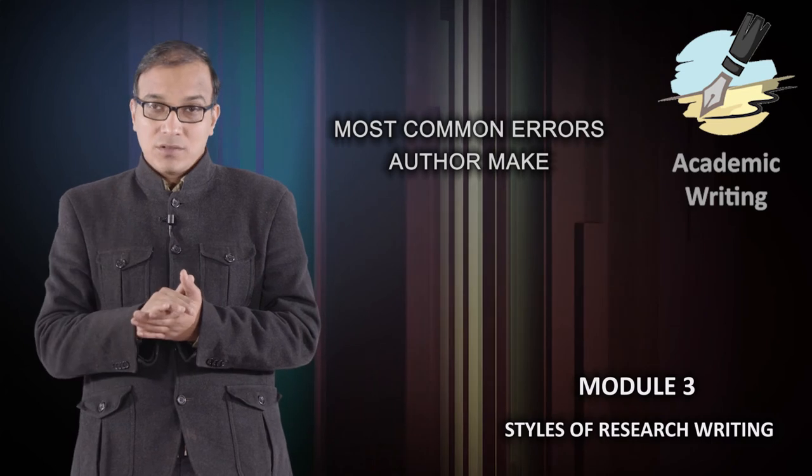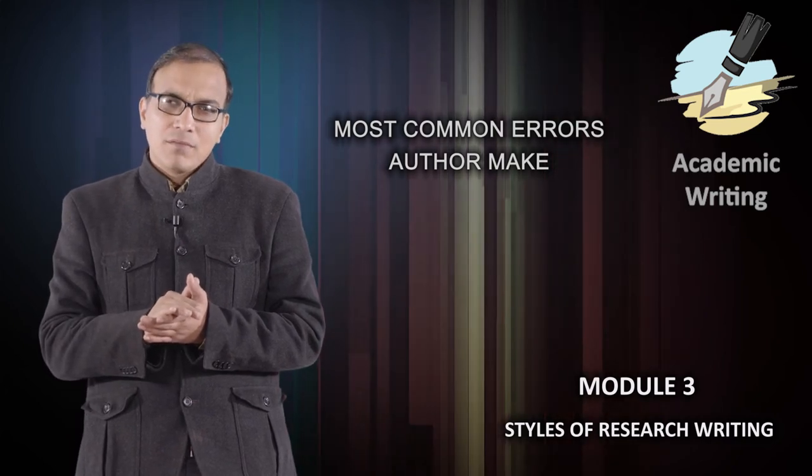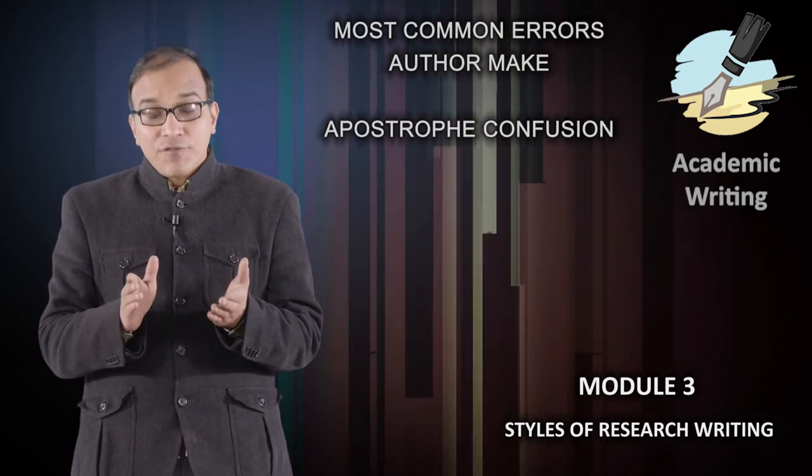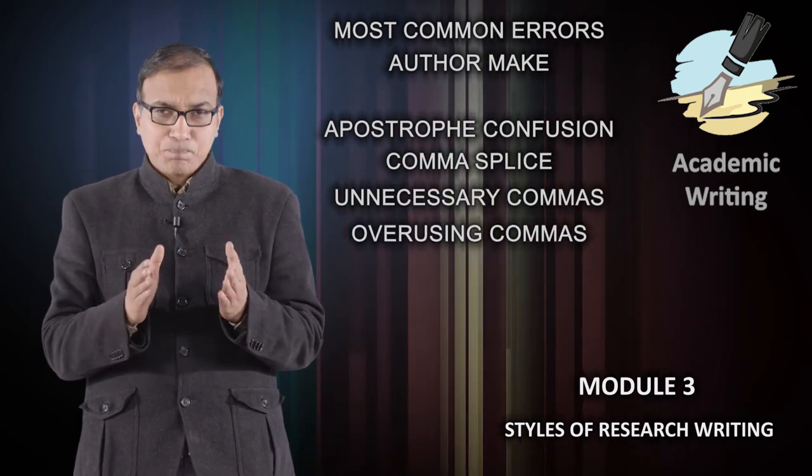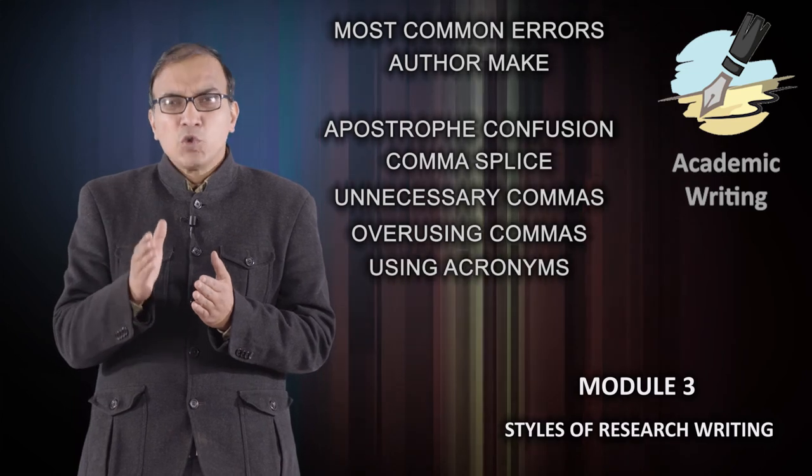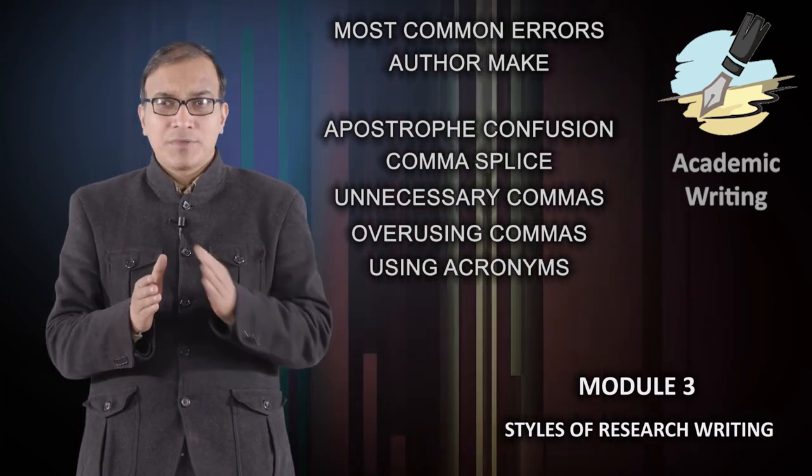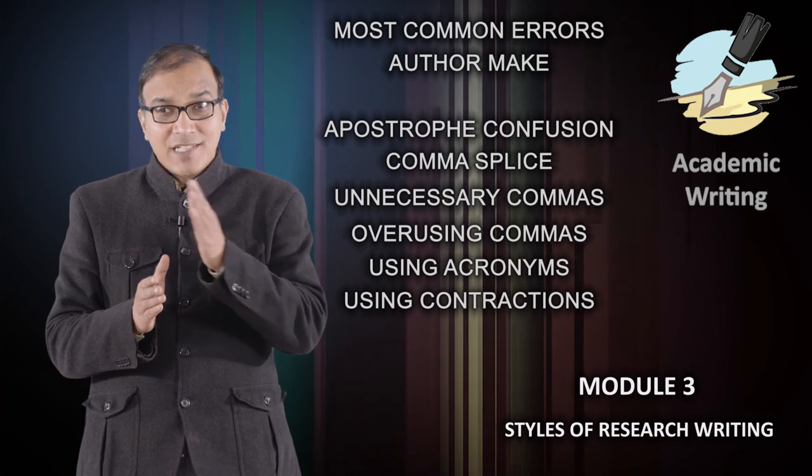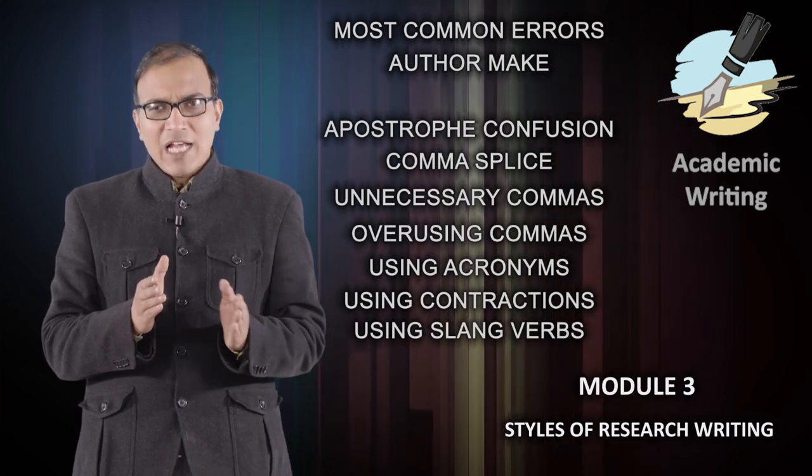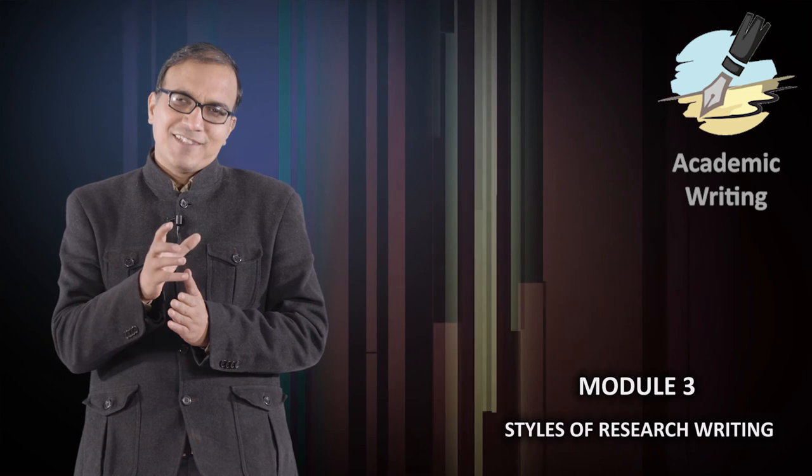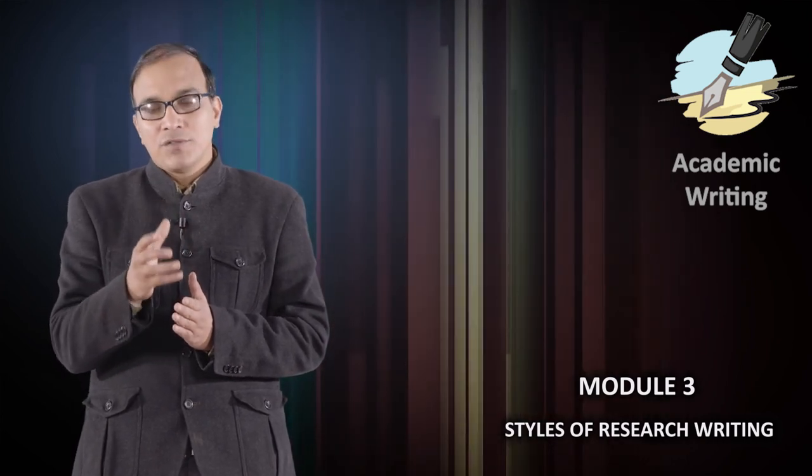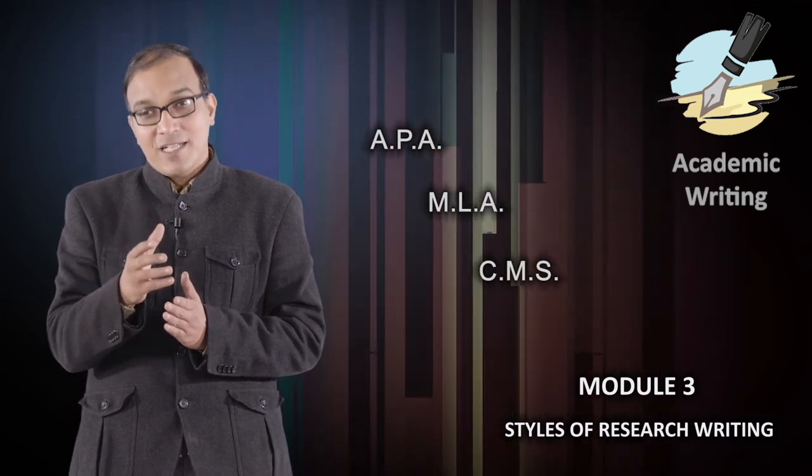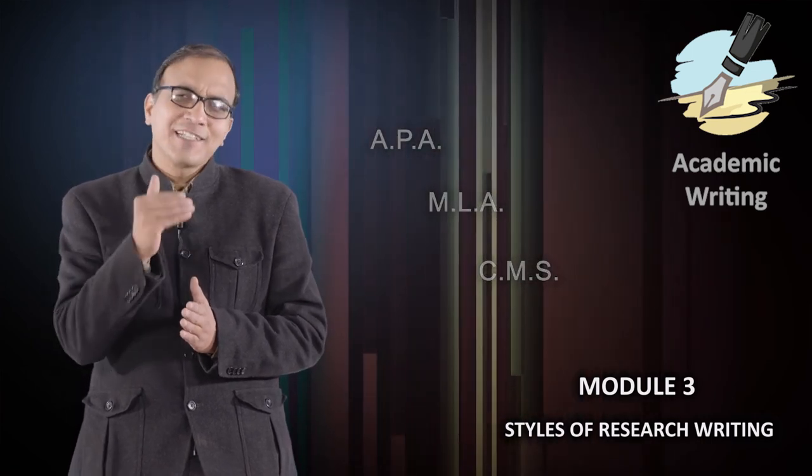Then we focused on the most common errors authors make: apostrophe confusion, comma splice, unnecessary commas, overuse of commas, and using acronyms. Don't use acronyms, contractions, slang verbs - don't use casual words. Then we focused on writing styles given by various associations: we focused on APA, MLA, and CMS, and learned about some citation managers.